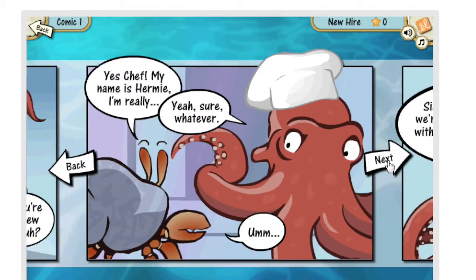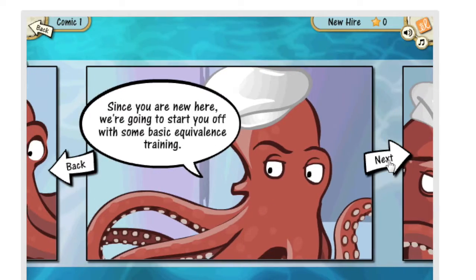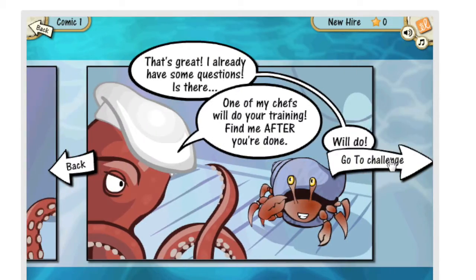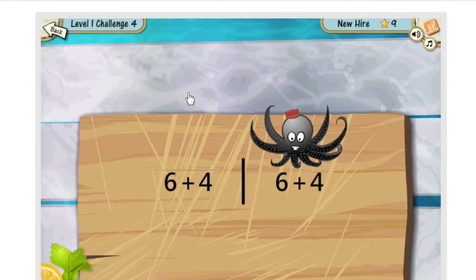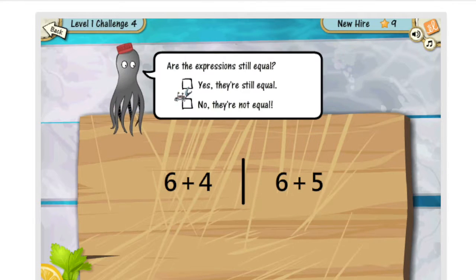Students start off as a new hire in basic training at the Undersea Equivalence Eatery. The cantankerous octopus chef named Theodore Grumpy wants to make sure students know how to use a property to transform an expression.